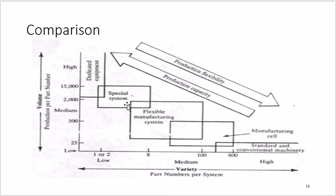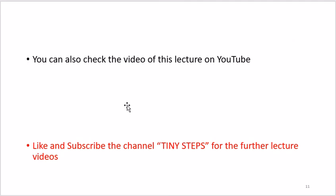This comparison graph shows when to use each of the five manufacturing systems. None of them is wrong — it depends on your application. Dedicated equipment, flexible manufacturing systems, and standard conventional machinery each have their place depending on the application. That covers today's lecture. If you want to check other videos, please subscribe to the channel Tiny Steps for previous and upcoming lectures.